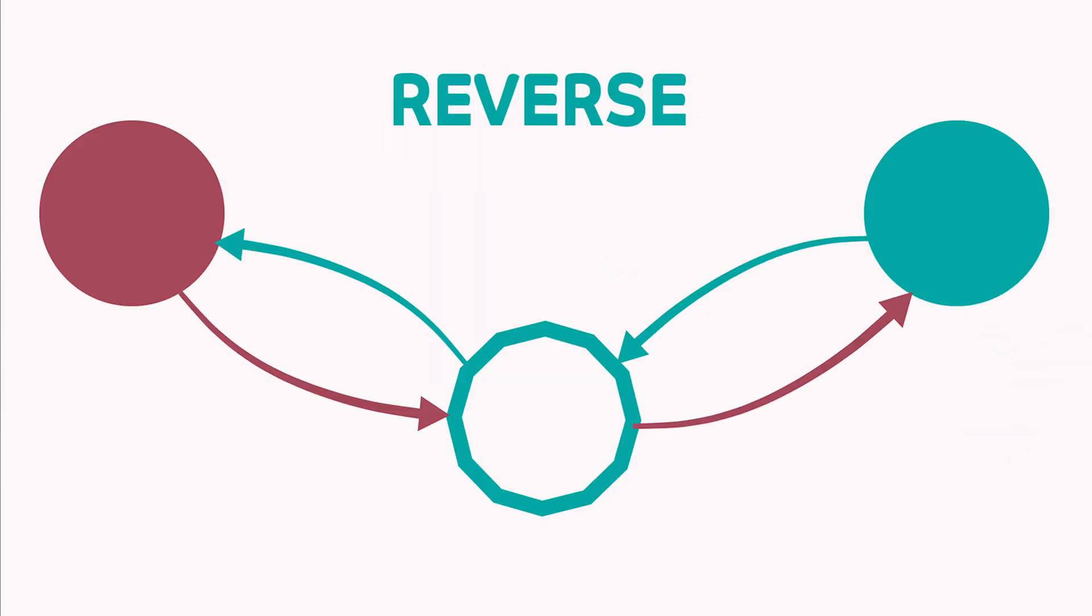A reverse proxy, also known as a gateway, is a proxy configured at the server site. It appears to the client just like an ordinary server. Here, the client doesn't know where is the actual destination server. In the client's view, the reverse proxy server is the destination server, and all requests should be sent to it.